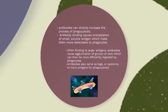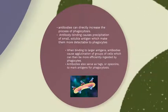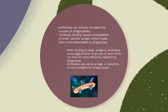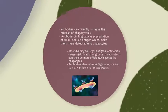Some other functions are: antibodies can directly increase the process of phagocytosis. Antibody binding causes precipitation of small soluble antigens, which makes them more detectable to phagocytes. When binding to large antigens, antibodies cause agglutination of groups of cells, which can then be more effectively ingested by phagocytes. Antibodies also serve as tags or opsonins to mark antigens for phagocytes.